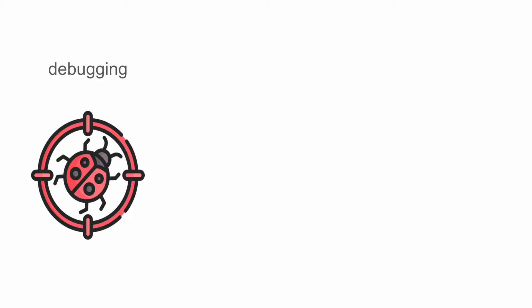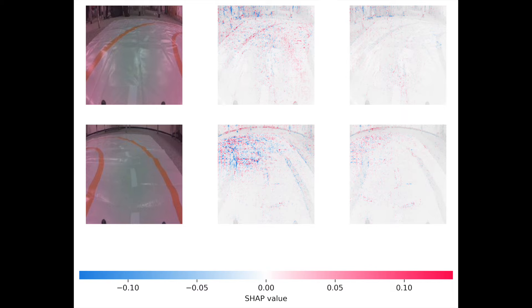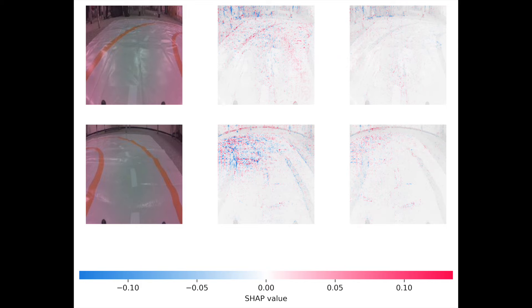SHAP has some key benefits. The first is debugging. SHAP allows you to take a closer look at incorrect predictions and understand which features have caused the error. We can also find cases where the model may perform well on a dataset but would perform poorly on new data in production. One example comes from a model used to power a mini automated car — the model was using background pixels and objects in the background to make predictions, so when the car moved to a new location, the objects changed and predictions became unreliable.